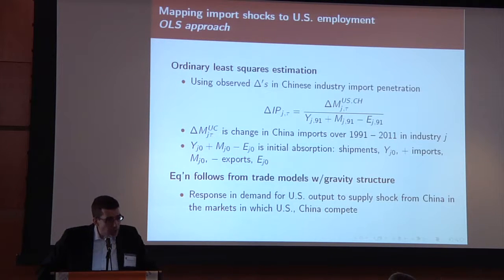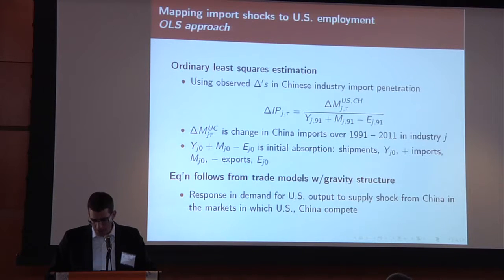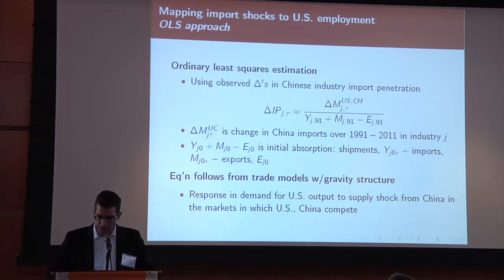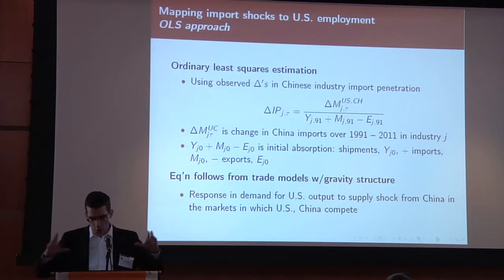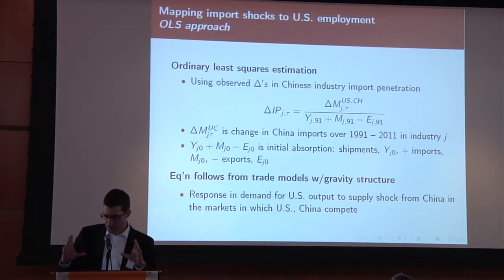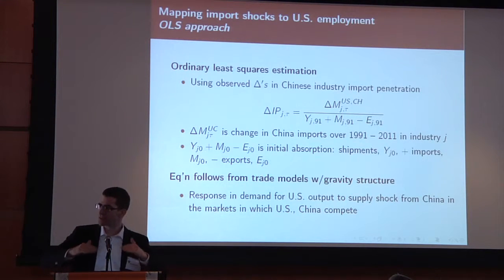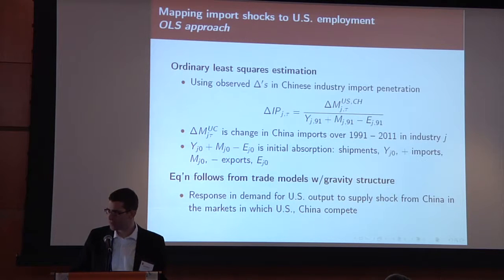We continue by characterizing the trade exposure at the level of an industry. One can use a class of trade models to get to an expression for the growth in the value of imports that US industry J gets from China over some time period tau, expressed as a multiple of the initial US market volume of goods of that industry.